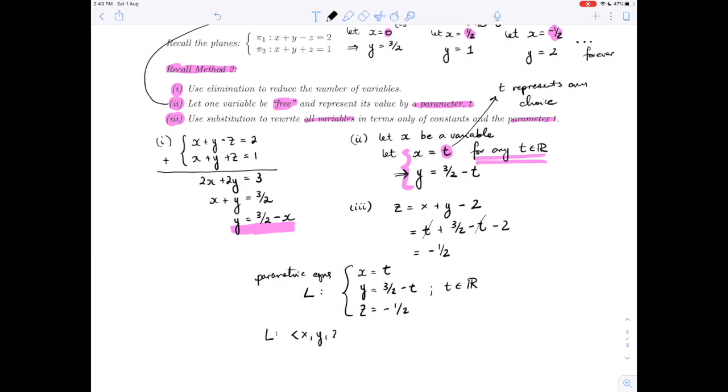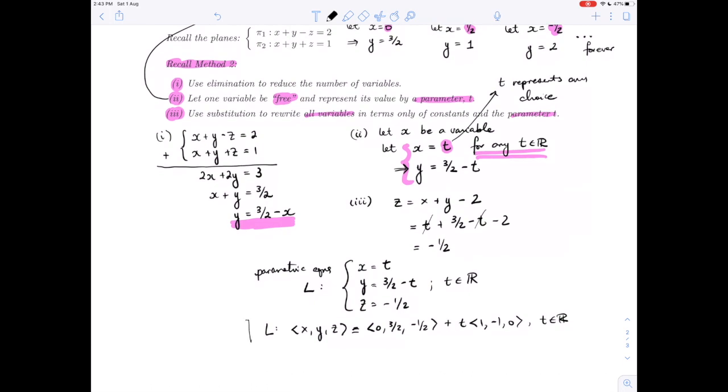If we wanted to write this in vector form, that's (x, y, z) = (0, 3/2, -1/2) + t(1, -1, 0) for t in R. If you go and check what we did at the end of the last video, that was the answer we got from our geometric method as well. This is an algebraic approach using free variables to find the line of intersection of two planes.